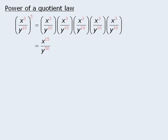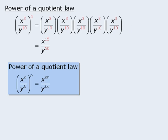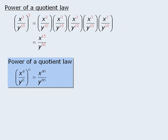So we can generalize these results as follows. If we are raising a quotient to a certain power, let's say n, then to simplify this, we multiply n by the exponents within the quotient. For example, to simplify this power of a quotient, we first multiply the outer exponent 11 by the exponent in the numerator 7, to get k to the power of 77. And then we multiply 11 by the exponent in the denominator to get w to the power of 33.